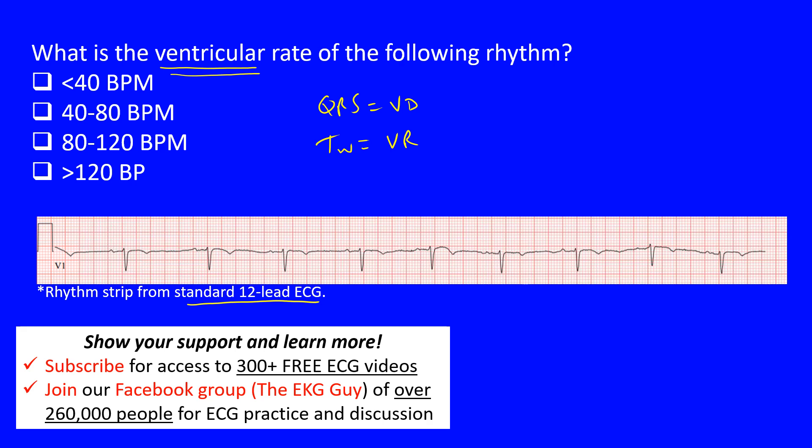If we were looking for the atrial rate, you would use the P waves. On a standard ECG, most machines will give you the ventricular rate but not the atrial rate. The machine is not always correct, which is why you shouldn't be highly dependent on what it gives you for the axis, rate, or anything else — you need to be able to calculate this yourself.